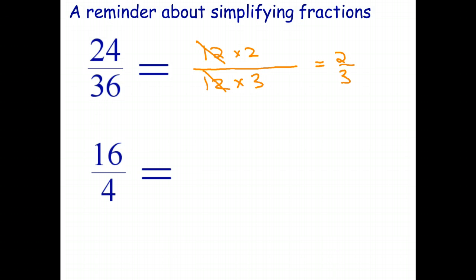Looking at the second one. Again, I'll do this a longer way just to illustrate something. So 16 can be written as 4 times 4. We can divide out the common factors of 4.